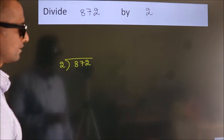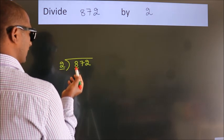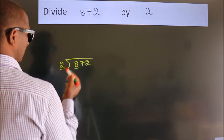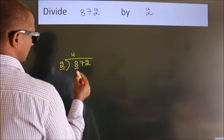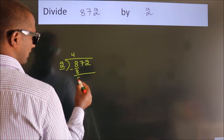Next. Here we have 8, here 2. When do we get 8? In 2 table, 2 fours, 8. Now we should subtract, we get 0.